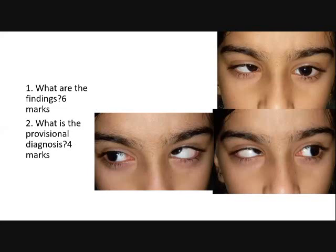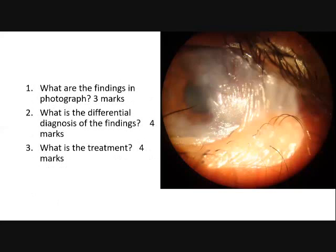It is difficult to comment about the retraction in these photographs, but what else would you expect in Duane's retraction syndrome in addition to narrowing of the palpebral fissure? Abduction or adduction deficit. There should be a limitation of adduction or abduction or both. Keep these things in mind when making a plan for squint surgery — not all cases are straightforward.